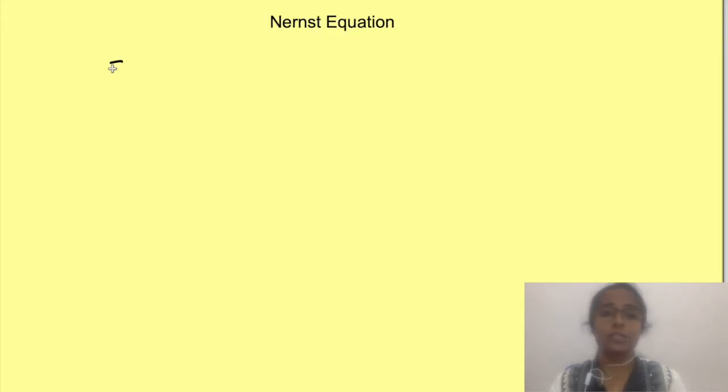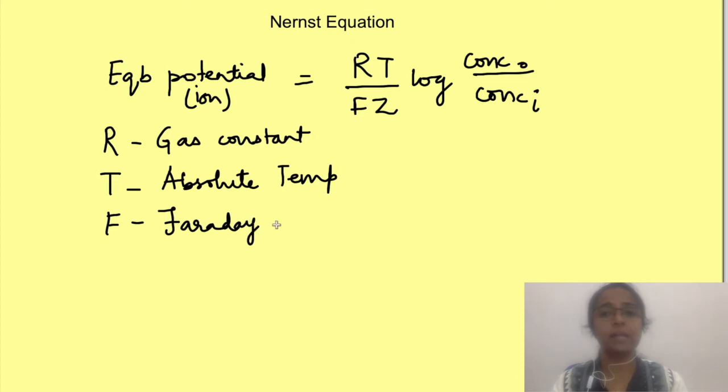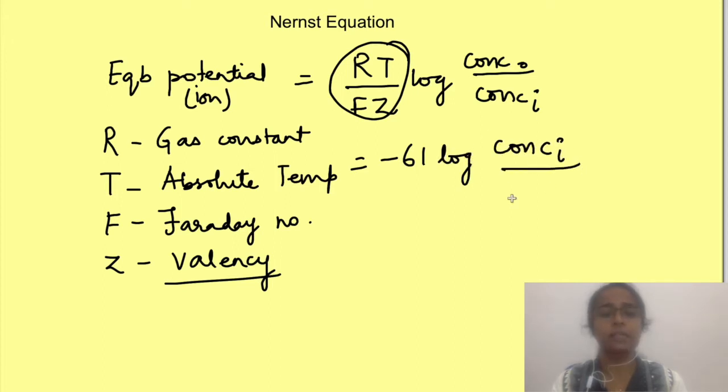Nernst equation states that equilibrium potential for an ion is equal to RT by FZ log concentration of ion outside divided by concentration of ion inside a membrane. Where R is gas constant, T is absolute temperature, F is Faraday number, and Z is valency of ions. I will not go into the maths of all these but instead we will simplify the equation. We will solve this value. It comes to minus 61 log concentration inside divided by concentration outside.